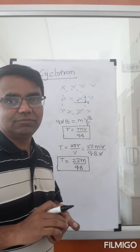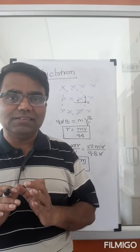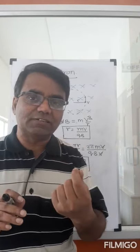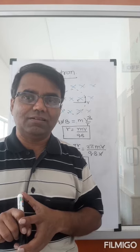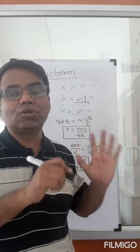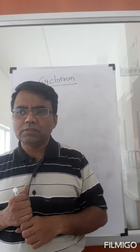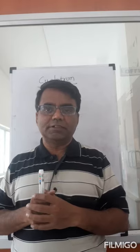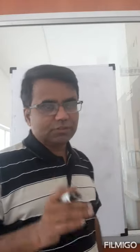So how can I use this idea to accelerate particles? How can I take a particle of a certain speed and increase the speed to my desired level? That is what you will see in a cyclotron. A cyclotron is an instrument which is used to accelerate charged particles. Let's see how it works. First, let's see the components of the cyclotron.